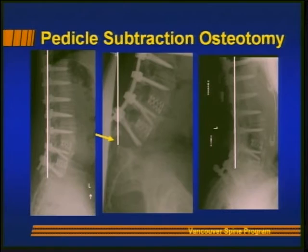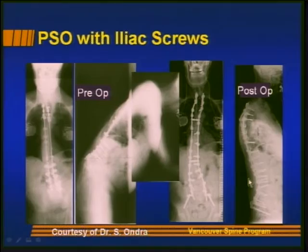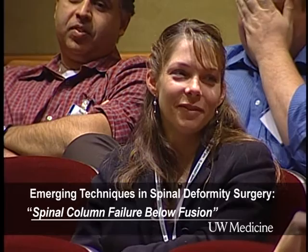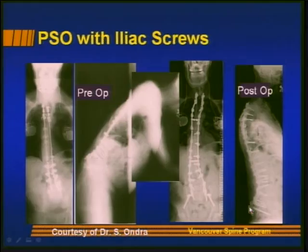The workhorse salvage procedure has been the pedicle subtraction osteotomy (PSO), usually done through the segment where the fracture occurs. A PSO with extension to the pelvis is the way to salvage these cases. One example is a patient of Steve Ondra's with Parkinson's disease who had caudal segmental failure salvaged with a PSO through L5 extended down to the ilium. The PSO is a workhorse operation for these situations.